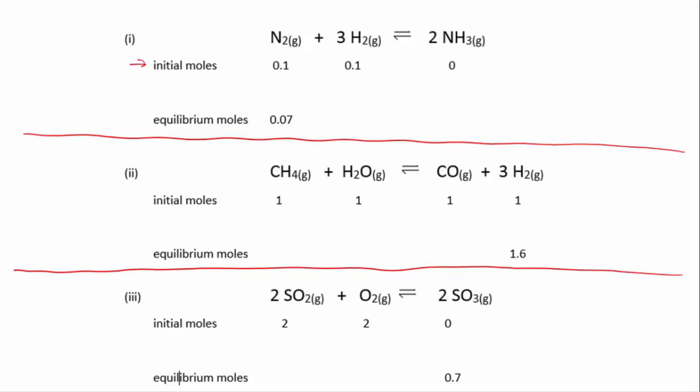Then the system was allowed to come to equilibrium, and you're given the extra piece of information that at equilibrium there is 0.07 moles of nitrogen. But you're not told how much hydrogen and ammonia there are at equilibrium, and that's what we want to work out.